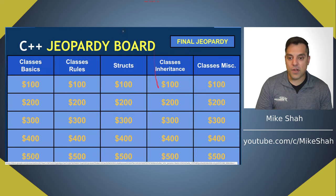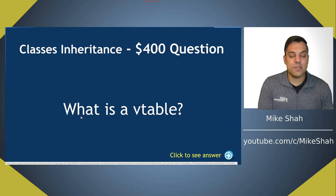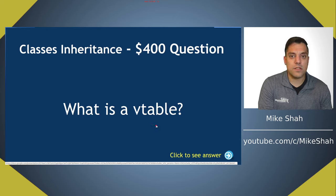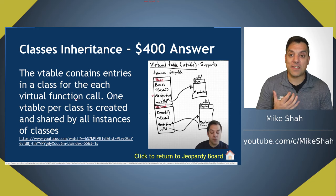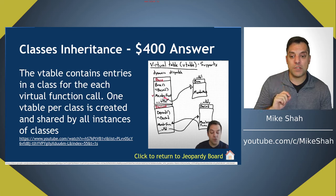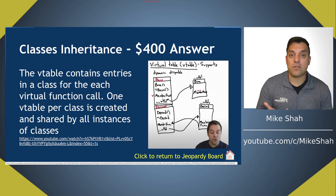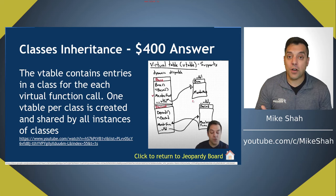For 400: what is a V-table? The V-table contains entries in a class for each virtual function call. Per class created, there's one V-table — usually a pointer at the bottom of the class. Here's a base class and a derived class, each with a V-table storing which member functions to call, ensuring the right function is called for each class.